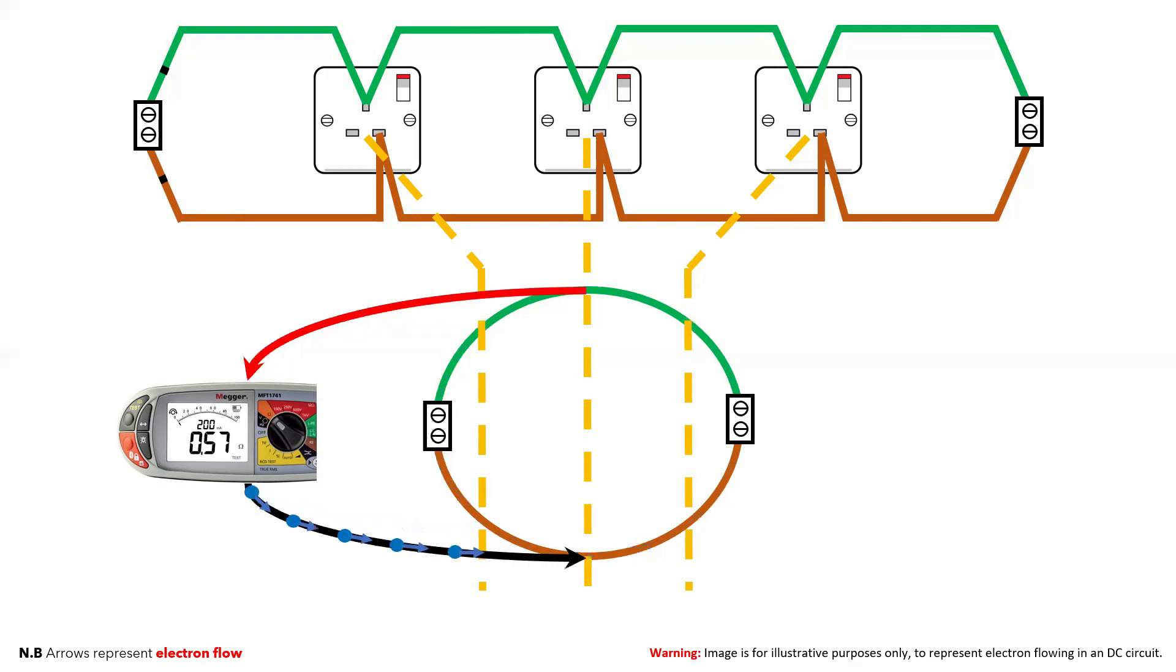At the middle point of the ring, you will get a similar amount of electrons flowing through both equal loops of the ring. Because this is the longest route for all electrons and requires the most energy to move them, this will then give you the highest resistance reading.